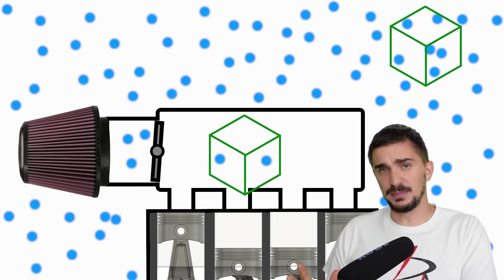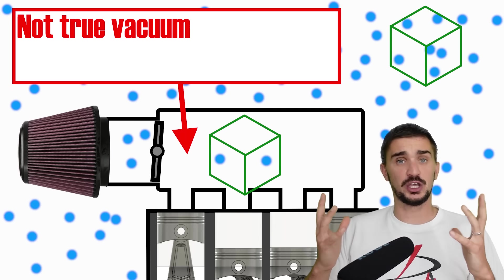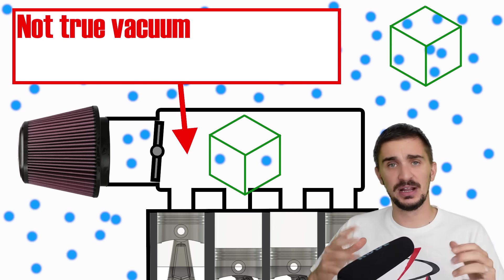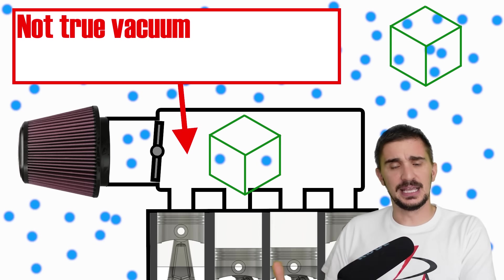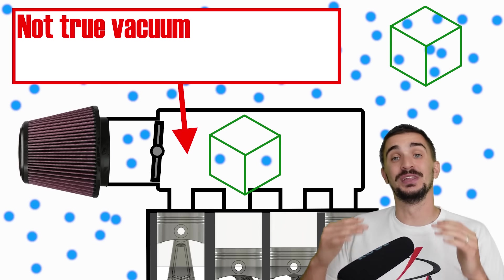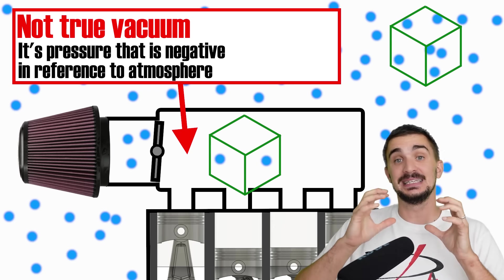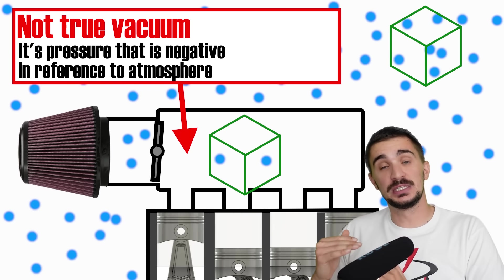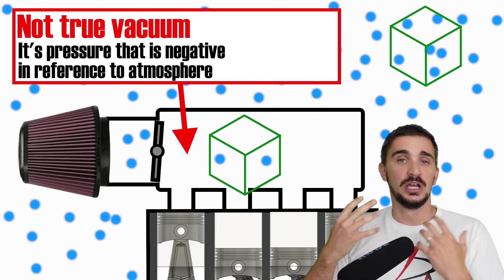Although the vacuum inside the intake manifold isn't a true vacuum. True vacuum would be a complete absence of air. Instead, we don't have that in the intake manifold. We have something that could be called negative pressure, because it is air pressure reduced in comparison to the air pressure of the atmosphere.